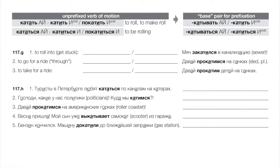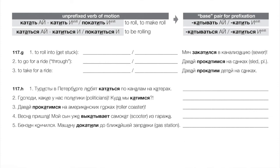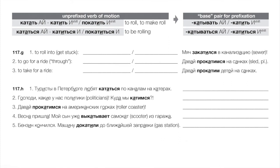More examples: давайте прокатимся на санках — let's go for a ride on a sled. To take someone for a ride — transitive, no reflexive particle: покатаем детей на санках — let's take the kids for a spin on a sled. We're causing them to roll, making them ride.